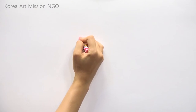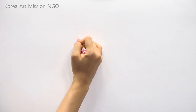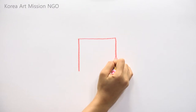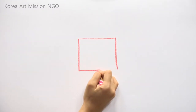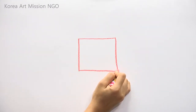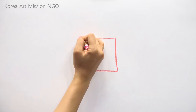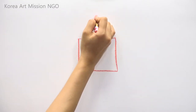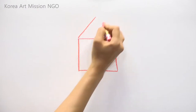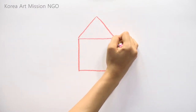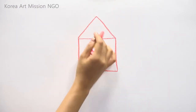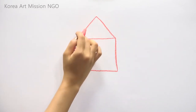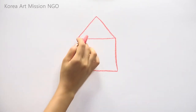First, I will draw a square, like this. I will draw a triangle on top and a roof on it. This is a triangular roof, and these are the walls of the square house.